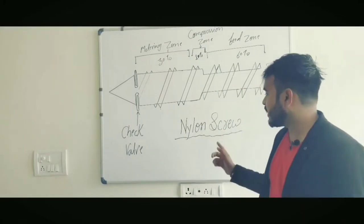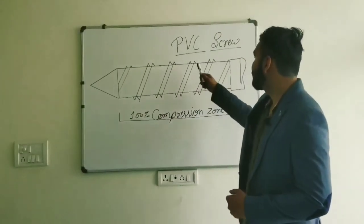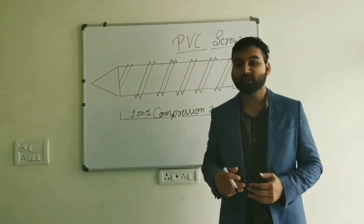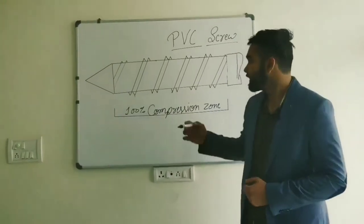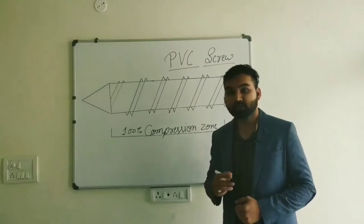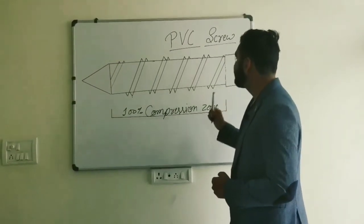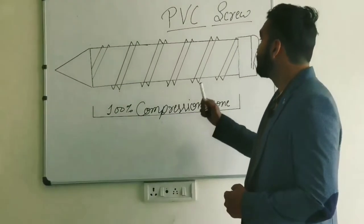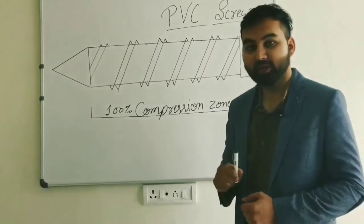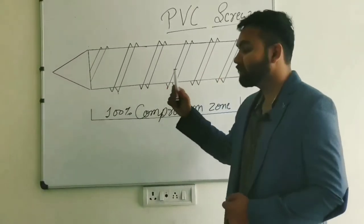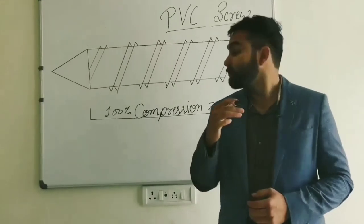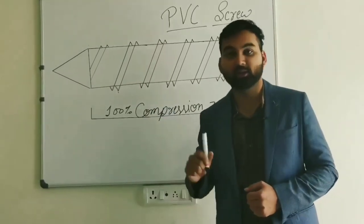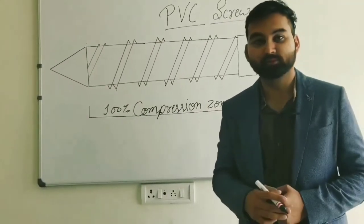Now moving to the third type — the PVC screw. PVC screw is basically used for polyvinyl chloride material, also known as PVC. All PVC pipes, pipe fittings, and similar products are made through this PVC screw. This PVC screw has 100% compression zone — no feed zone and no metering zone — because PVC is a heat-sensitive material. If the residence time of the material in the barrel is too high, the material will start degrading and cause problems for the product.